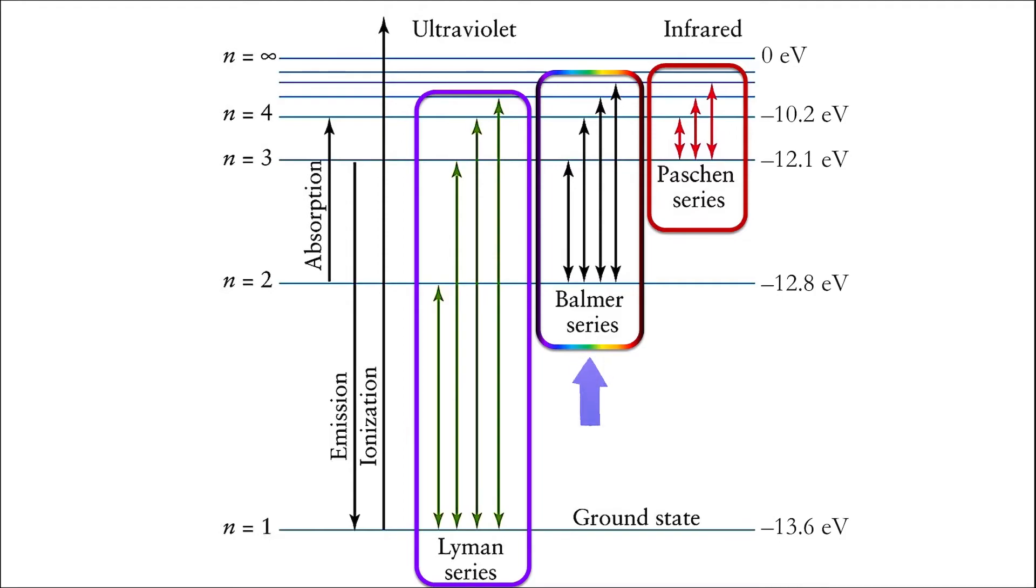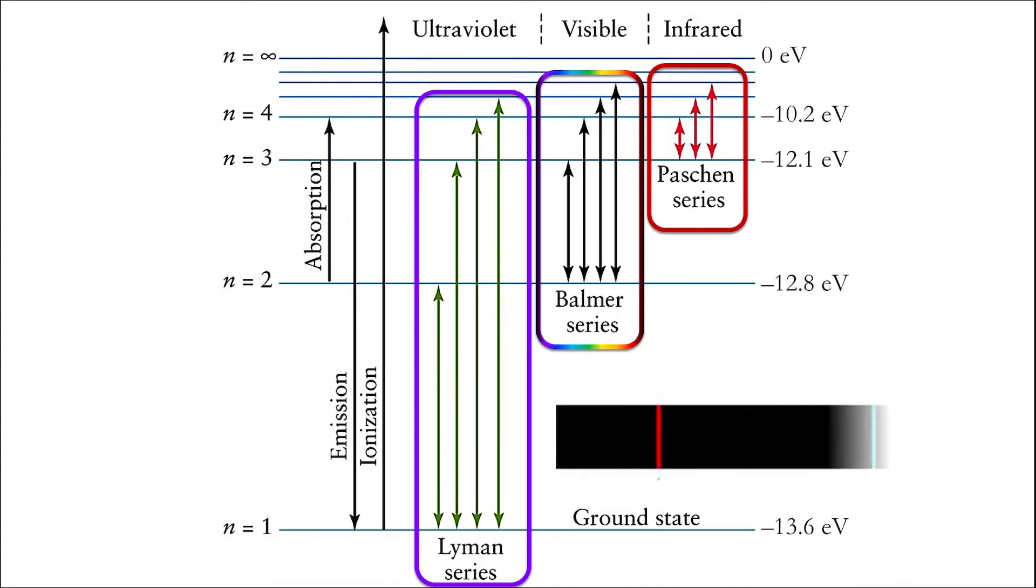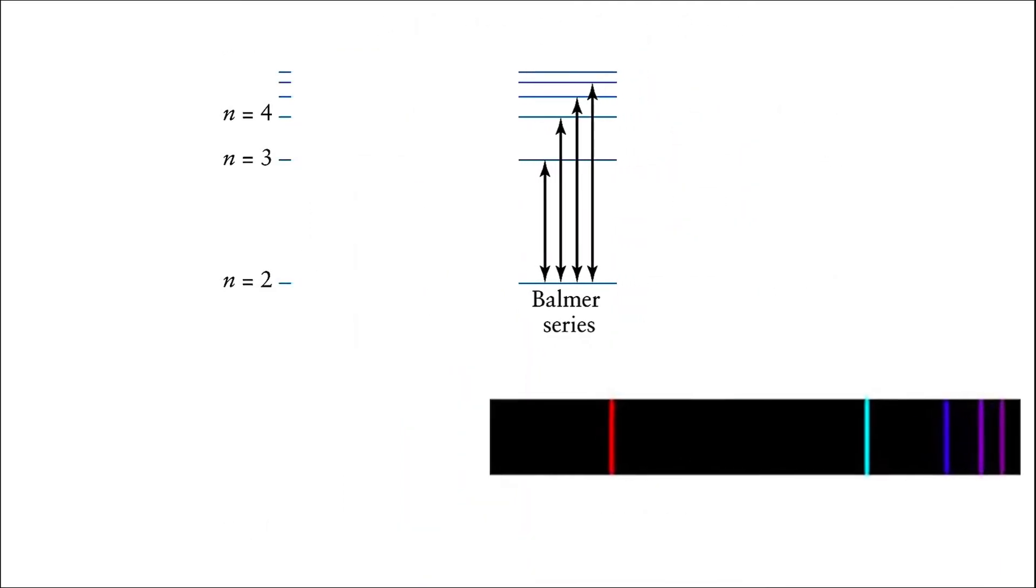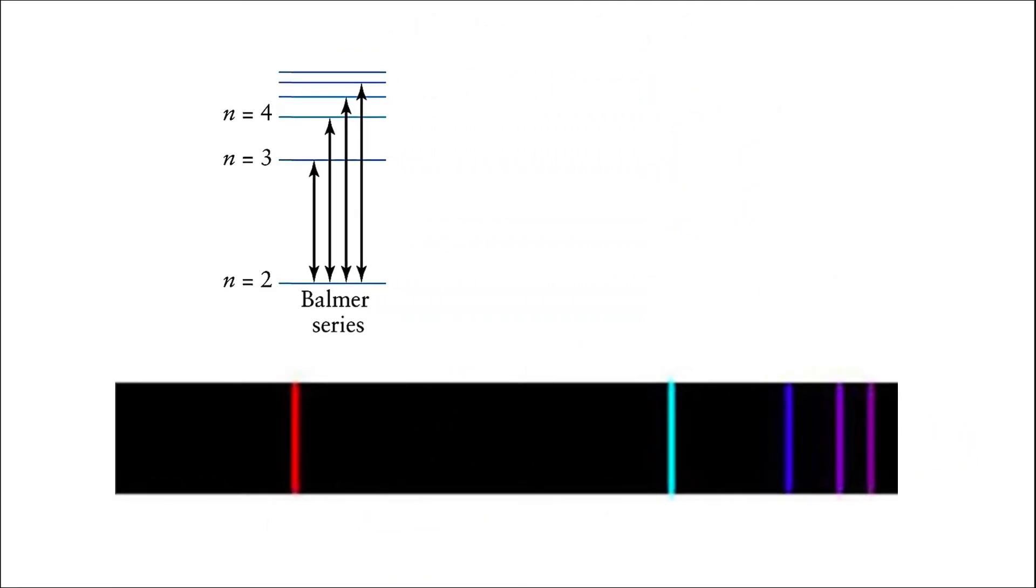The Balmer series, however, are extremely important since these are the transitions associated with visible photons of light. So when we look at the familiar emission spectrum of hydrogen, it's actually the Balmer series that we're looking at. Now each of these colors in the Balmer series is the result of a specific transition. The H-alpha line is caused by the electron transitioning from the third energy level to the second energy level. H-beta is the result of the electron transitioning from the fourth to the second energy level. And H-gamma and H-delta are formed by the electron transitioning from even higher levels to the second energy level, which we also call the first excited state.